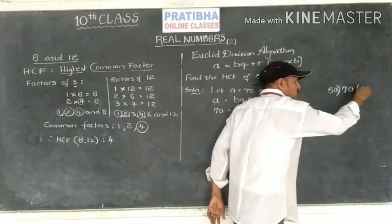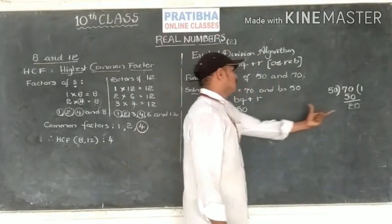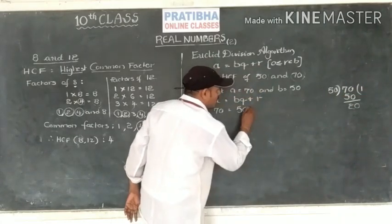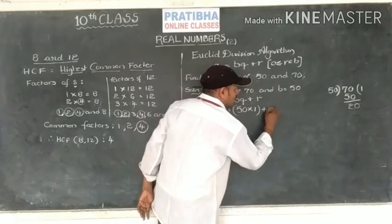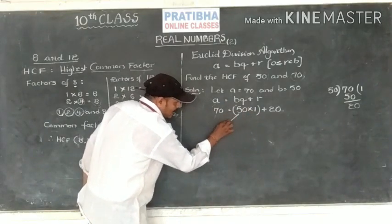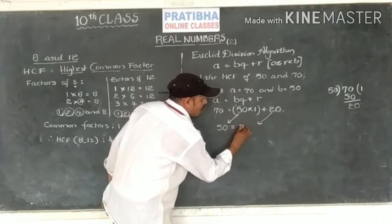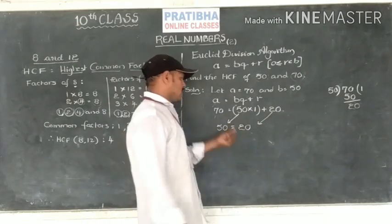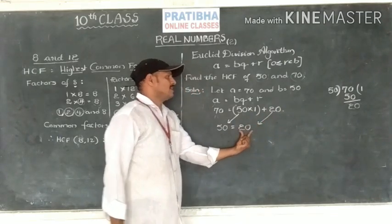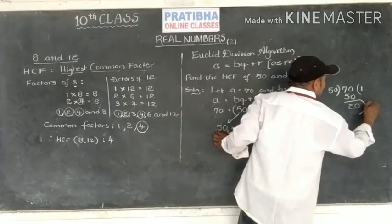70 divided by 50: one time of 50 gives 50, and the remainder is 70 minus 50 equals 20. So 70 equals 50 times 1 plus 20, where Q equals 1 and remainder equals 20. Now the second step: 50 becomes the dividend and 20 becomes the divisor. Apply the algorithm again. 2 times of 20 gives 40, remainder is 10. So 50 equals 20 times 2 plus 10.